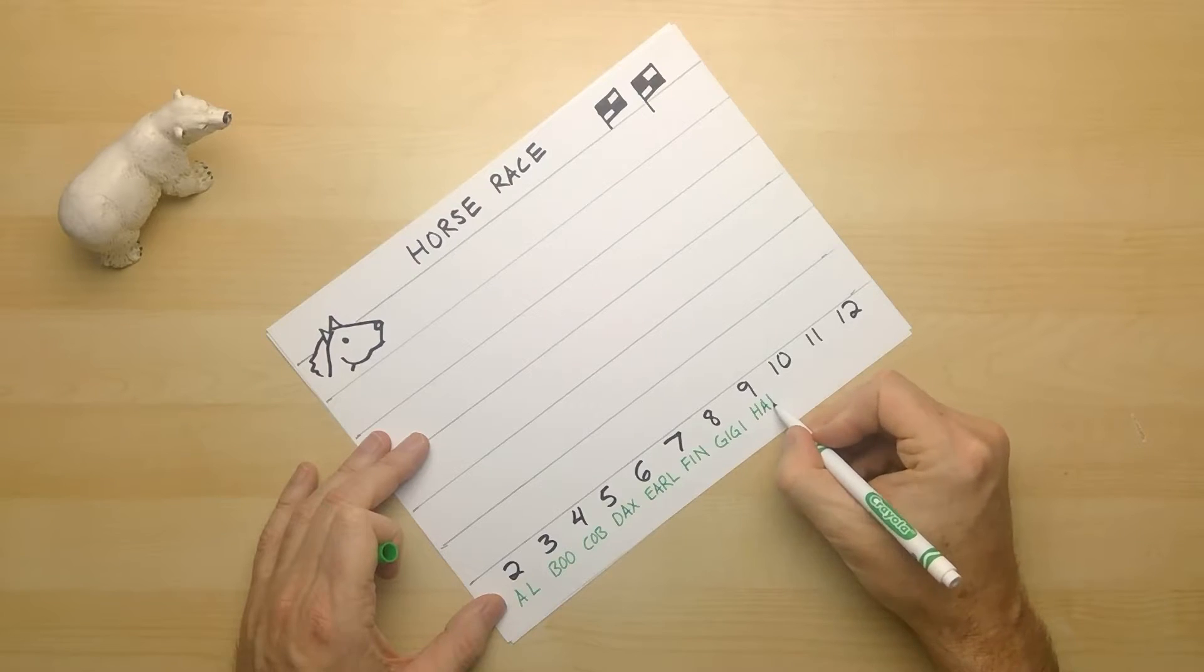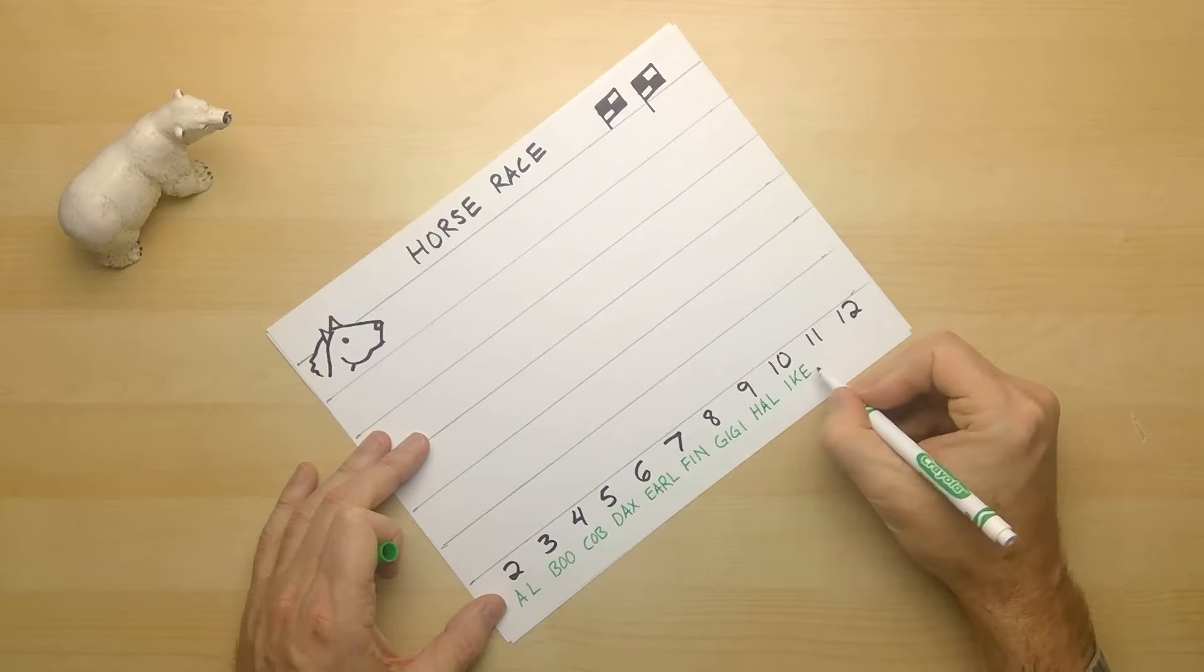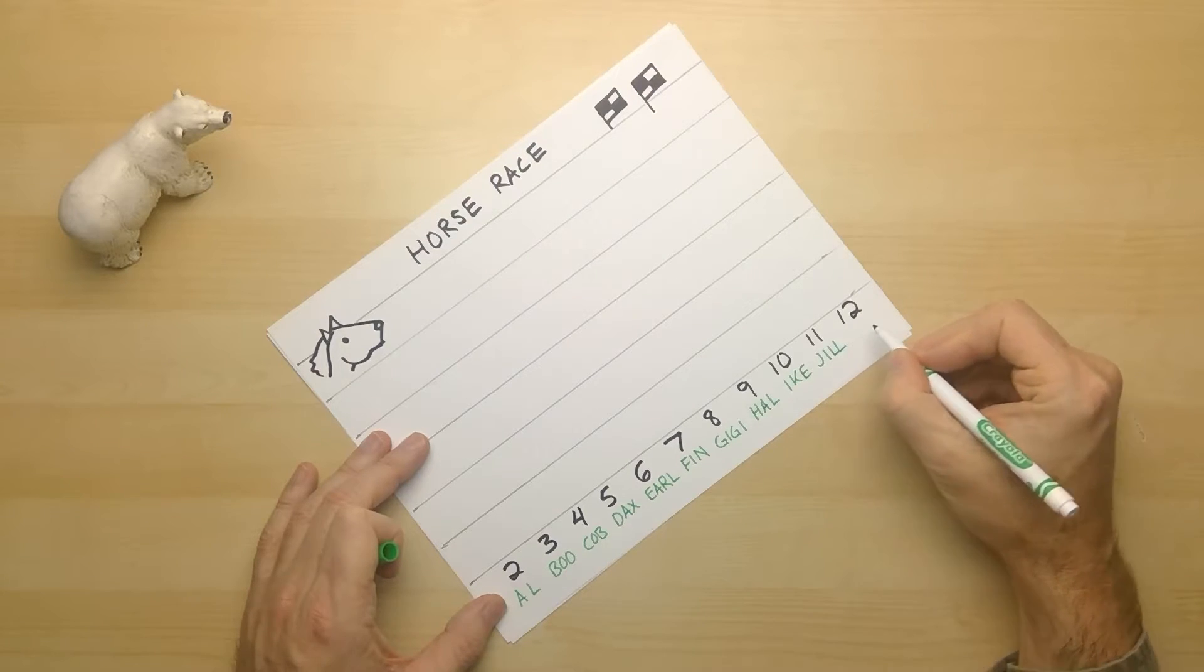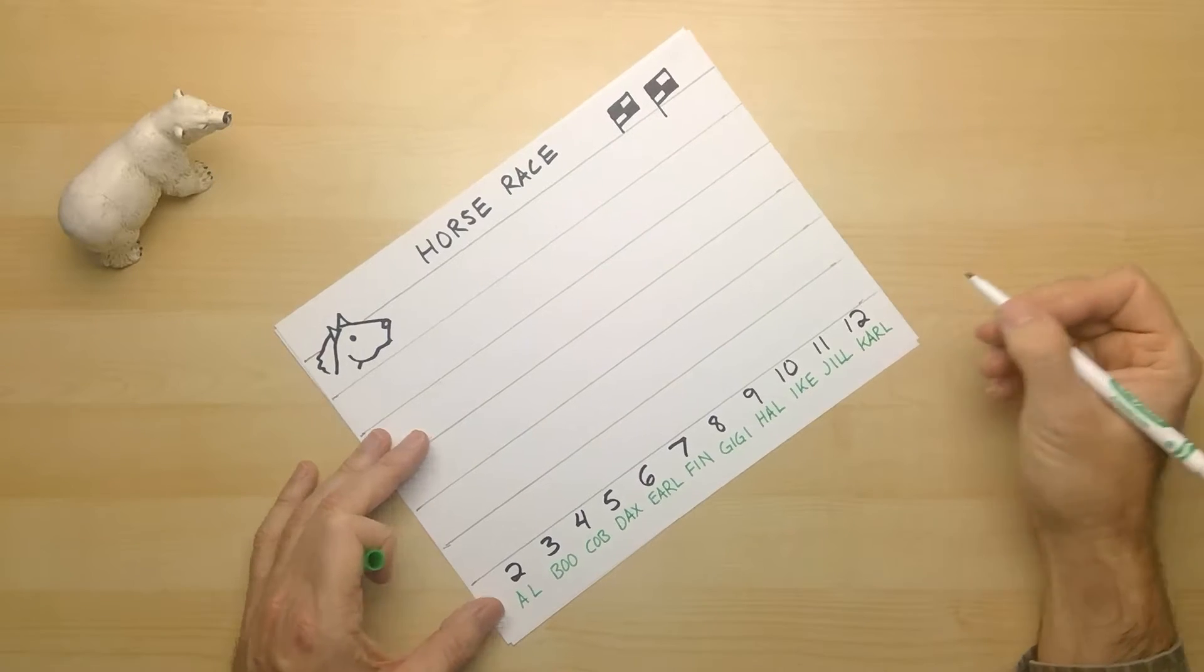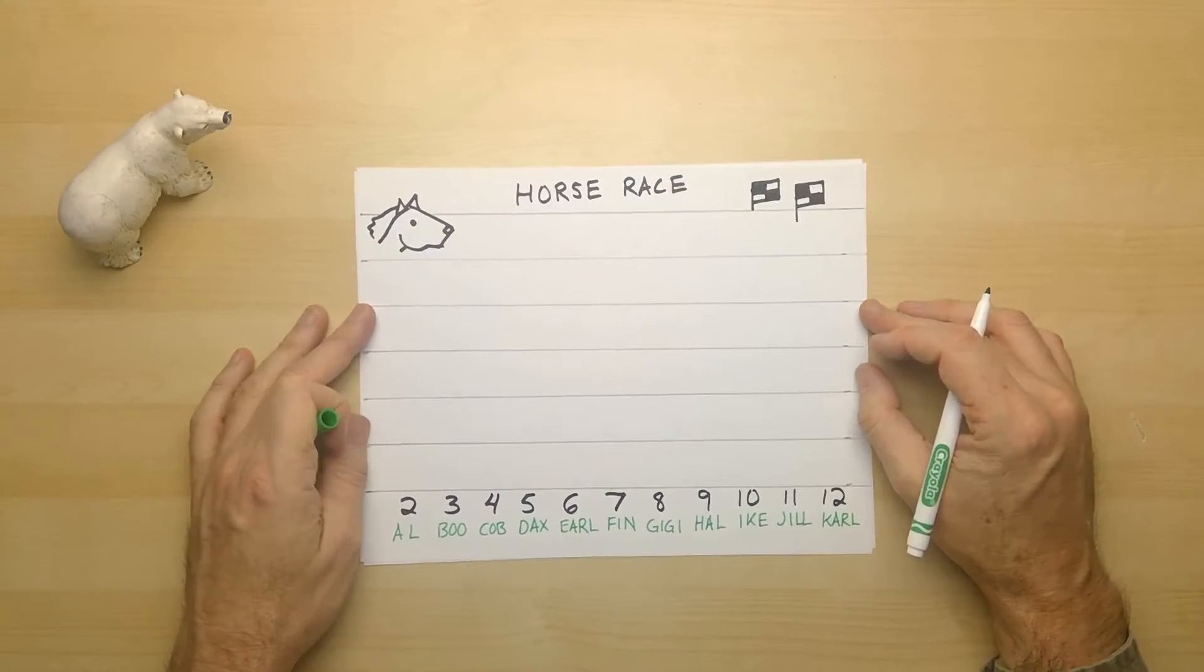Nine is called Hal. Ten, we'll call Ike. Eleven will be Jill. And twelve will be Carl. I'm sure you can think of great names for your horses. Maybe funnier than mine. Looking good so far.